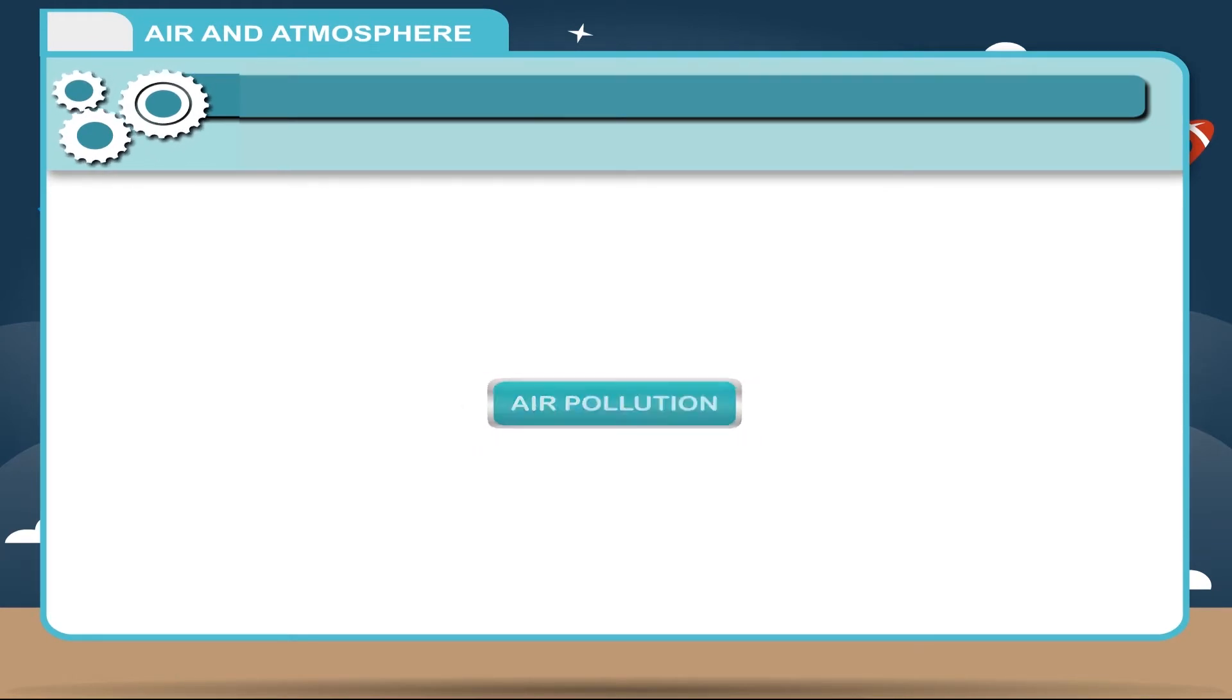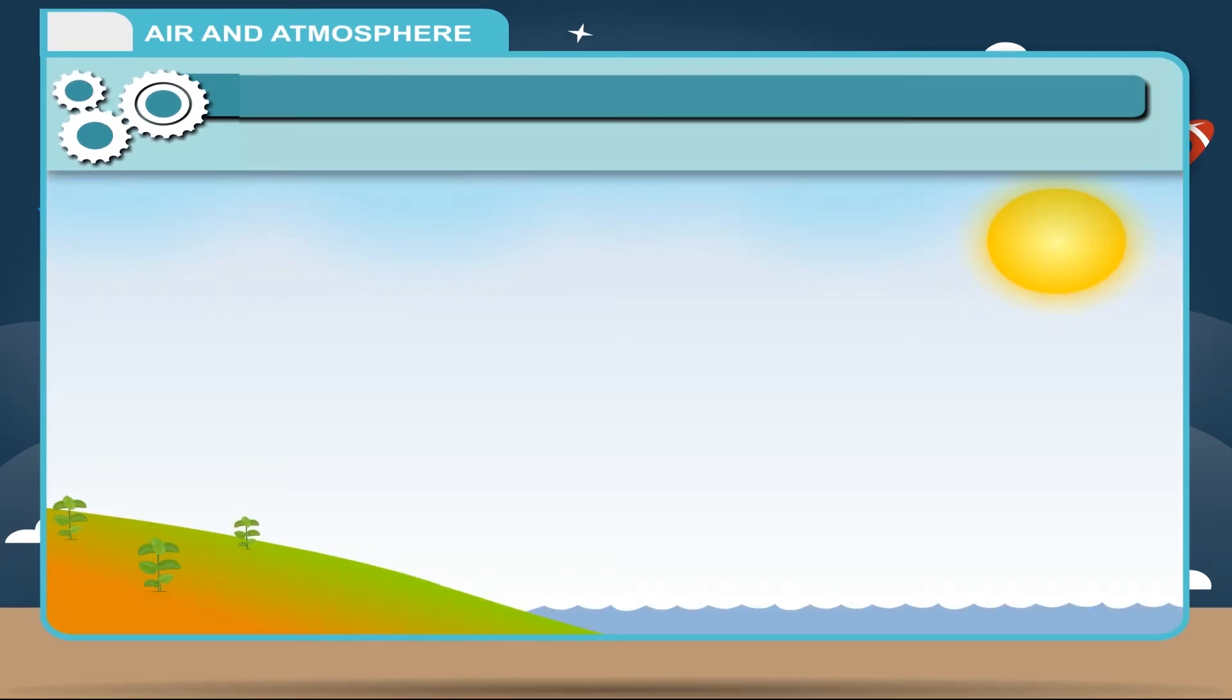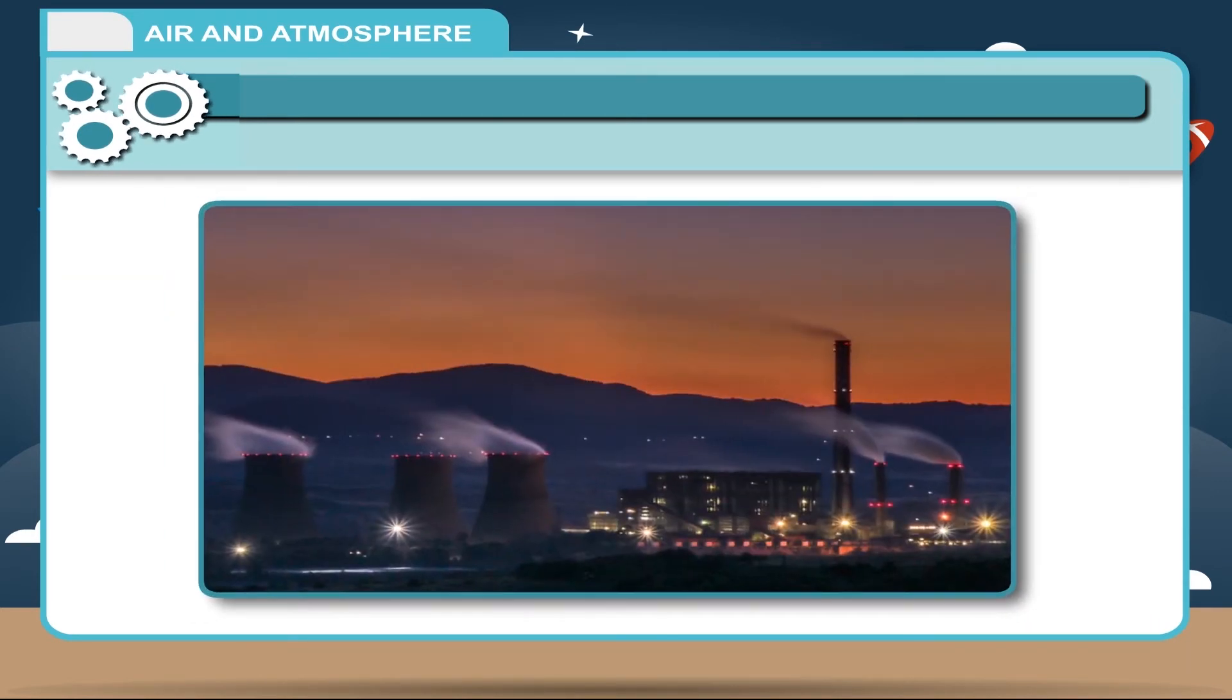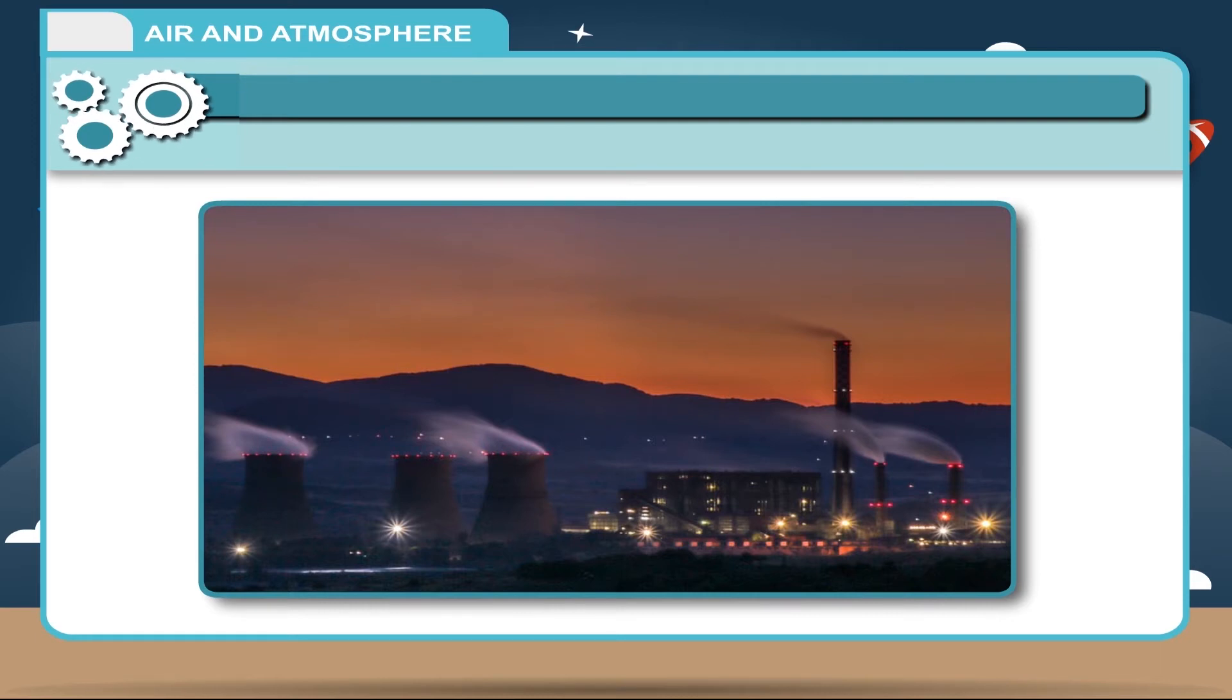Air pollution. The constituents of air change due to harmful substances like carbon monoxide, sulfur dioxide, and hydrogen sulfide. This undesirable change of atmosphere is called air pollution. Factors responsible for air pollution include automobile exhaust, thermal power plants, and factory by-products.